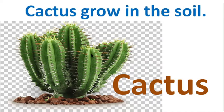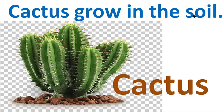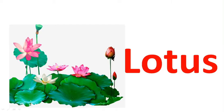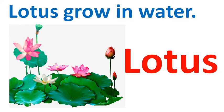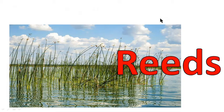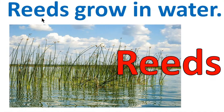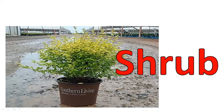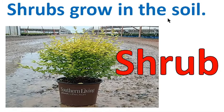Cactus grows in the soil. Grass grows in the soil. Lotus grows in water. These are reeds — reeds grow in the water. And this is a shrub — shrub grows in the soil.